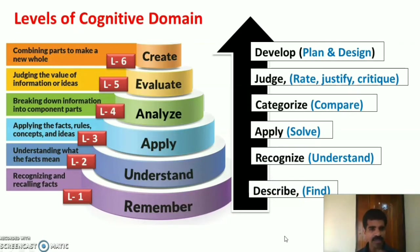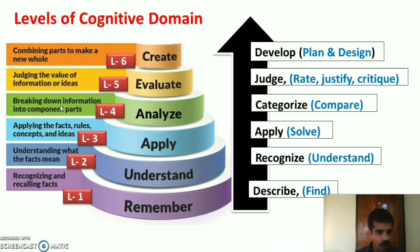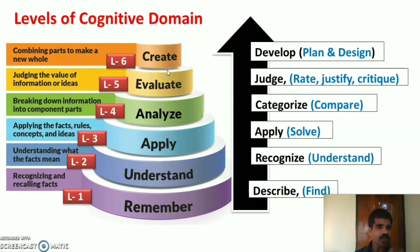To summarize, there are six levels of cognitive domain. First, remember — recognizing and recalling facts and information. Second, understand — understanding what the facts mean. Third, apply — applying facts, rules, concepts, and ideas in new situations. Fourth, analyze — breaking down information into component parts and comparing different information. Fifth, evaluate — judging the value of information or ideas, whether right or wrong, and rating them. Sixth, create — combining parts to make new ideas, developing and designing new plans.